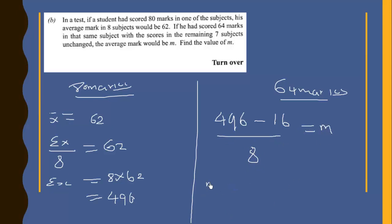So we know that our M will now be equal to 480 divided by 8, and this would have given us 60 marks. So the M is equal to 60 marks, meaning that you would have scored an average mark of 60.